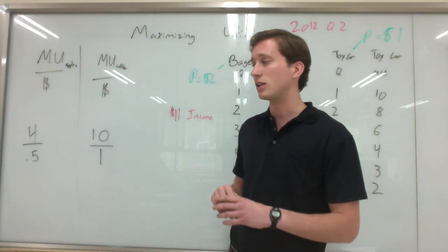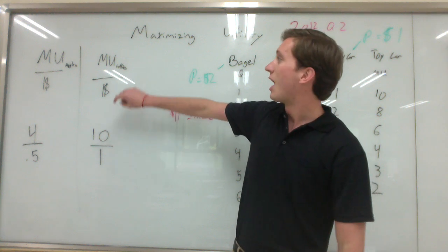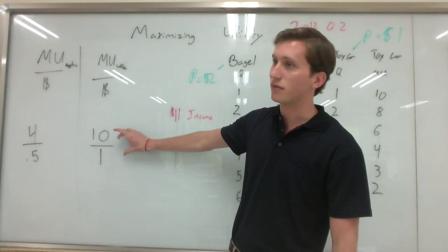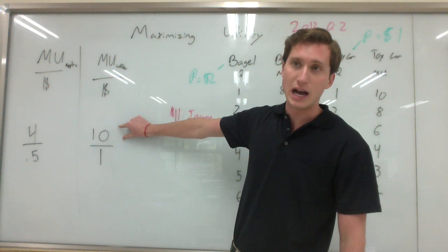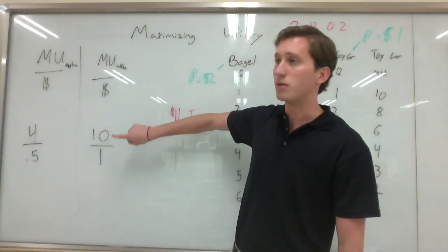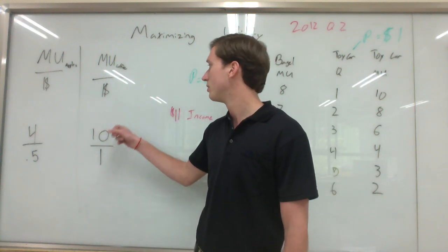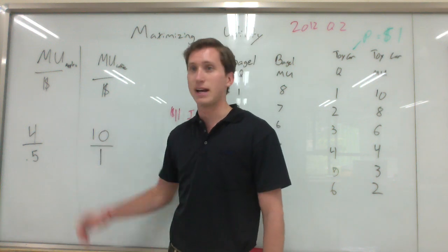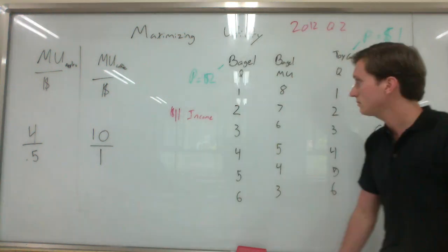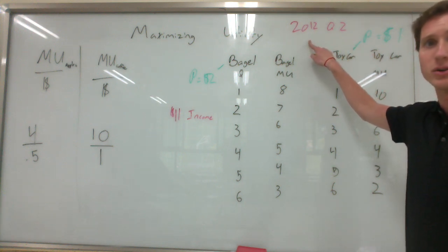That is diminishing marginal utility. So since this fraction is more, I should consume more coffee. The numerator, the top number, will go down a little bit. And then maximizing utility is when the marginal utility per dollar is equal to each other. So for this example, consume more coffee or less apples and maximize utility. Now here's a practice problem from the 2012 AP macro exam, question two.